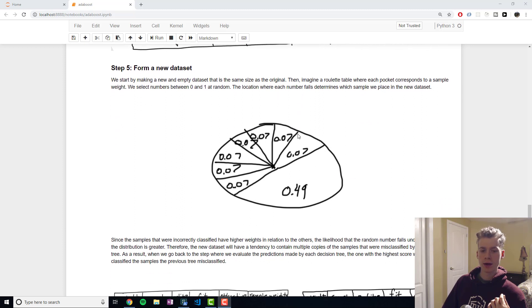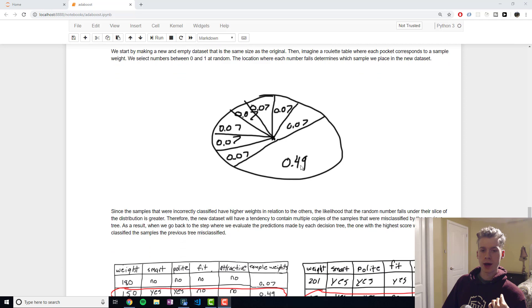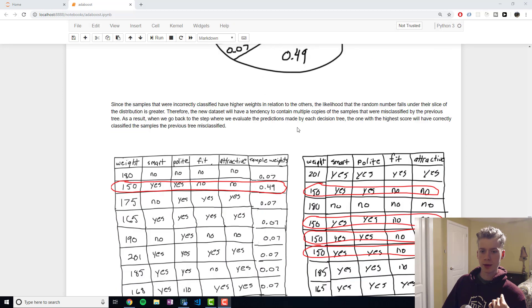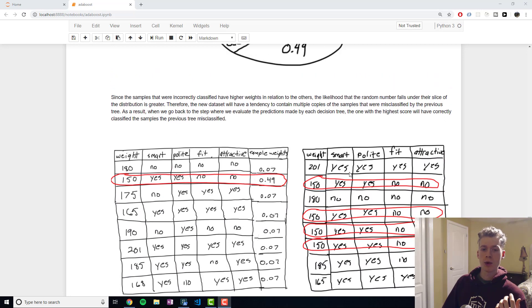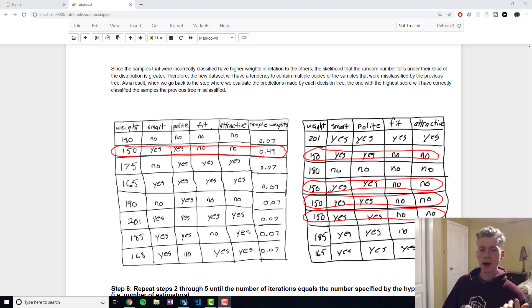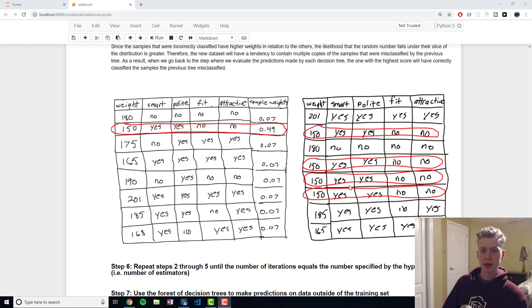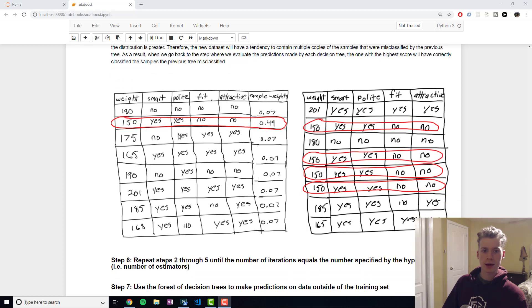Then what we do is we select numbers at random. Since our new dataset is going to have the same number of samples, in this case eight, we are going to select eight random numbers and they will randomly fall in one of these pockets. Because 0.49 takes up such a large portion of the roulette table, in our new dataset we're likely to end up with multiple copies of the sample that was incorrectly classified. Our incorrectly classified sample shows up four times in the new dataset.